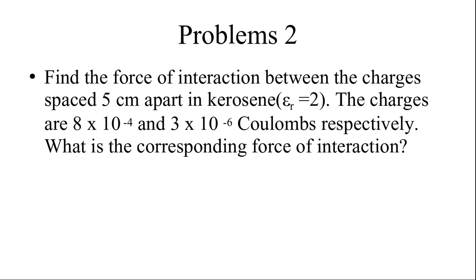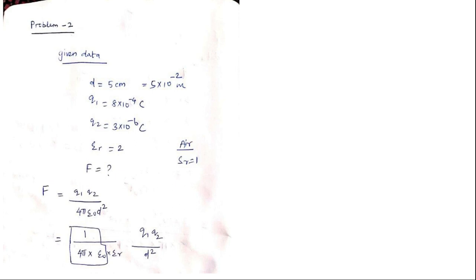These two problems are almost the same with only a small variation. In the last problem we used 1 by 4πε₀. Here we are going to use 1 by 4πε₀εᵣ. Actually in the last problem εᵣ was also there, but since the permittivity of the medium was not given, we took the default εᵣ = 1, because the relative permittivity of air is 1.